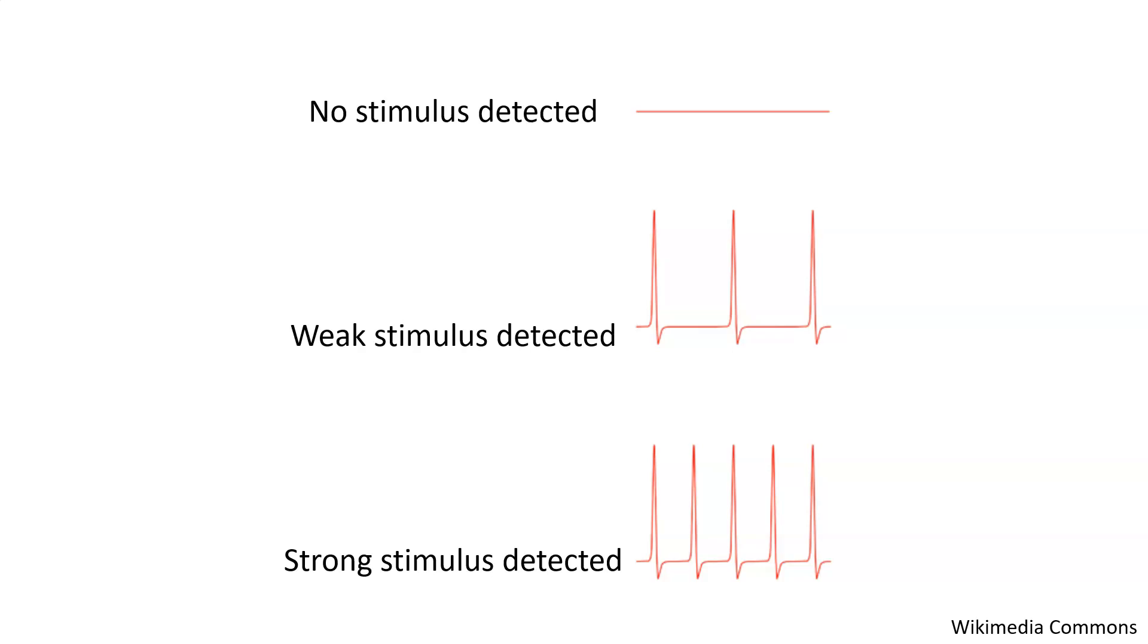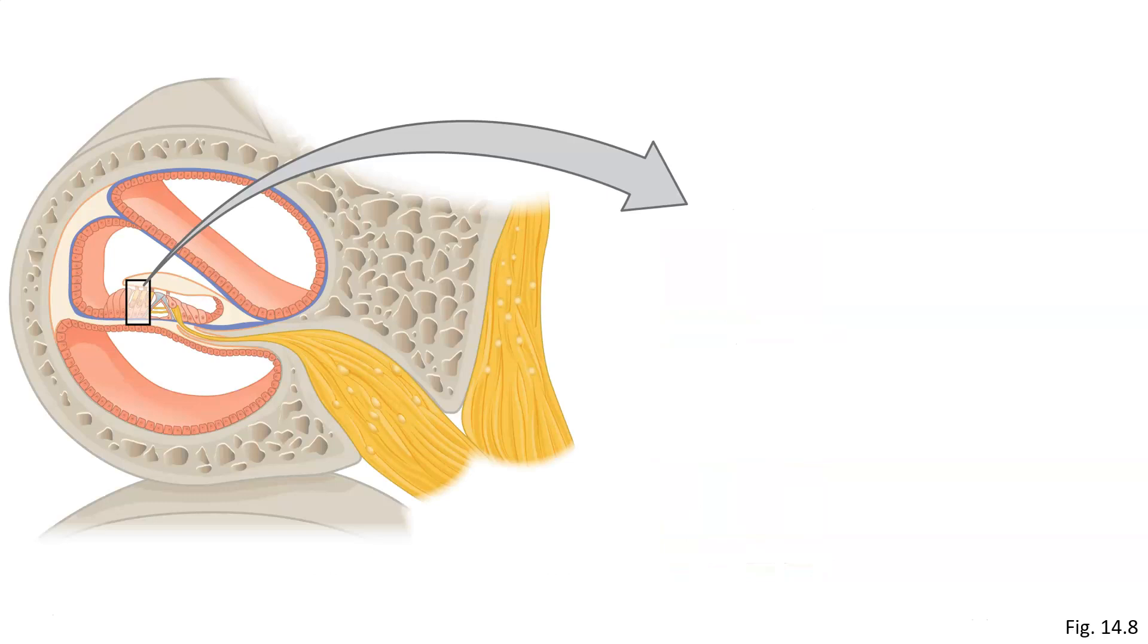Like you can see here, with the weak stimulus, it fires several action potentials. But in the strong stimulus, you can see that many action potentials are fired rapidly. So what exactly does this mean? Let's take a look at an example from the cochlea, the organ that detects sound.